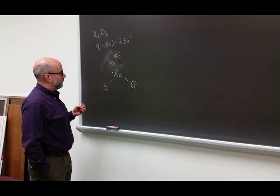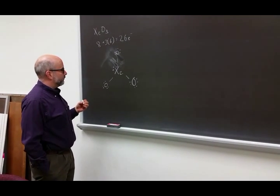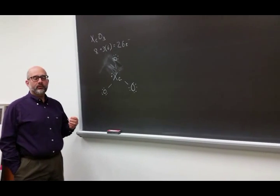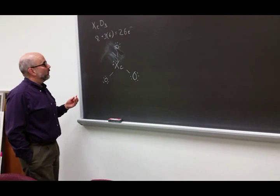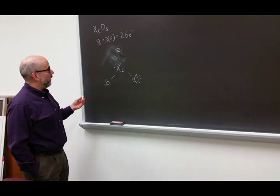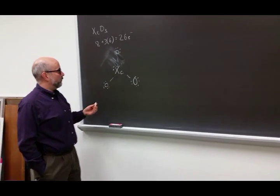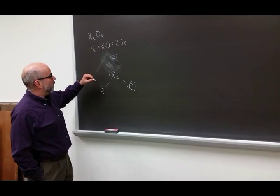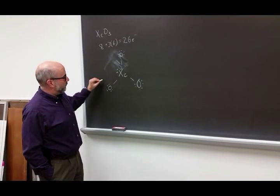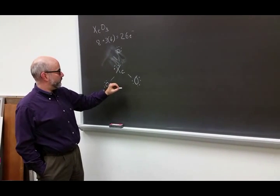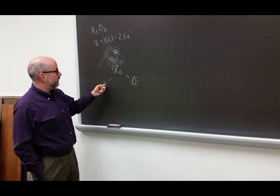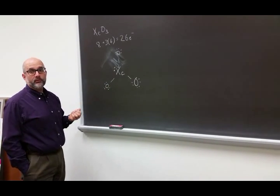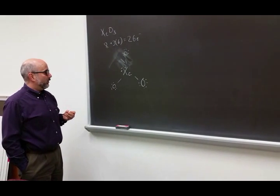Now look at whether everything satisfies the octet rule. By octet counting, remember you count all of the shared electrons. All of the oxygens have the eight electrons they want, and the xenon also actually has eight electrons by octet counting.